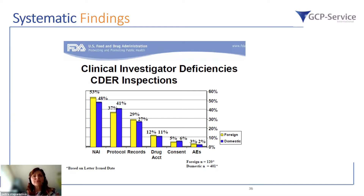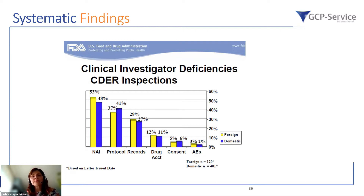This is an interesting overview comparing the number and percentage of findings from foreign and domestic inspections, which proves there are no big country-specific differences in terms of mistakes made. However, country-specific checks should still remain in focus.